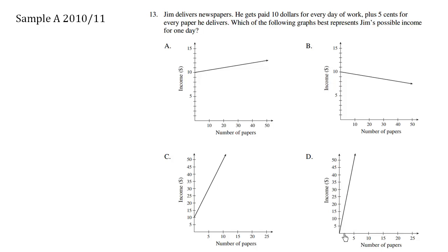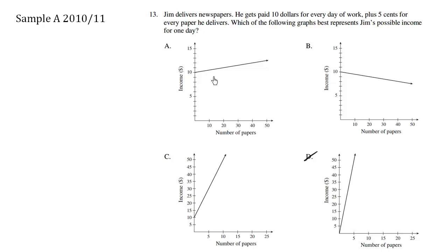According to D, he makes no money in the beginning for selling no papers, so D is not a possibility. We know he only makes five cents for each additional paper he delivers. Five cents is not much compared to $10, so five cents additional as we increase the number of papers is very, very little.